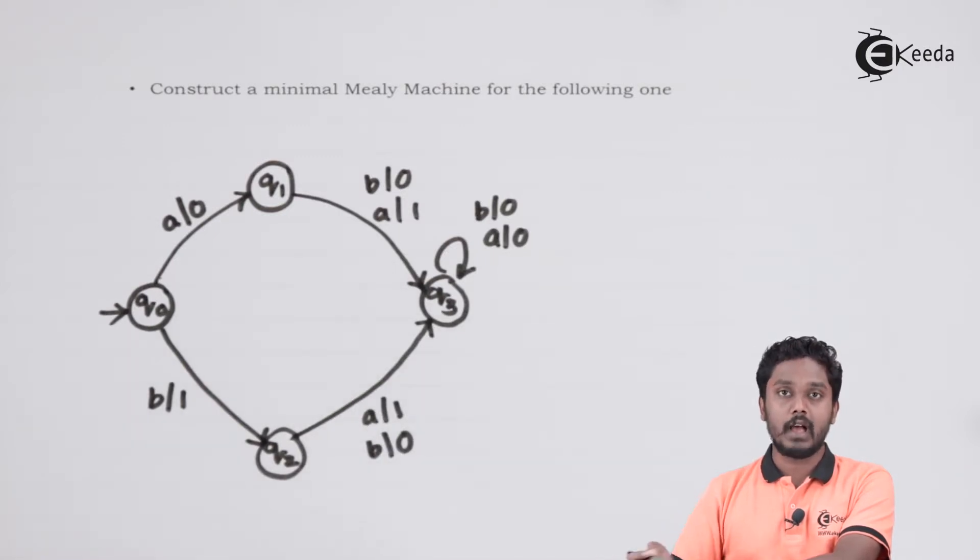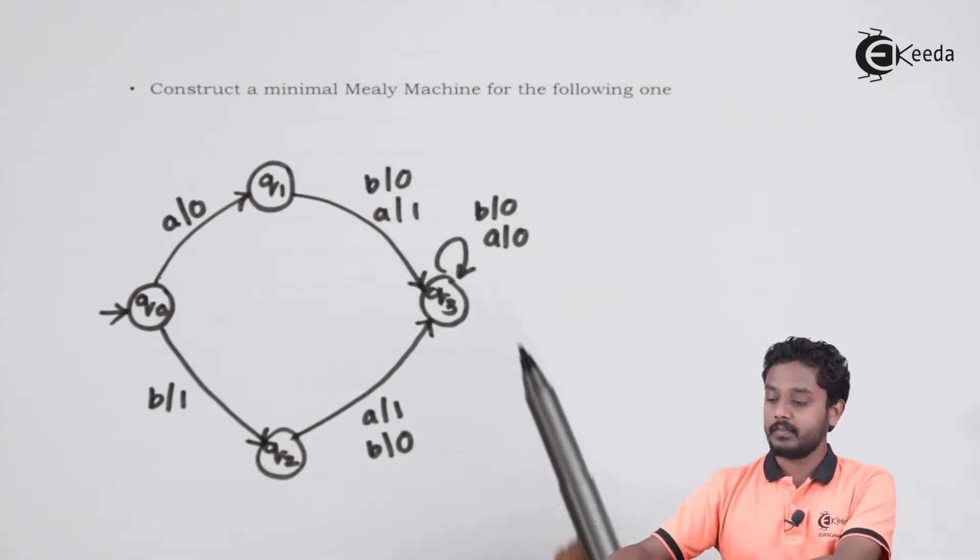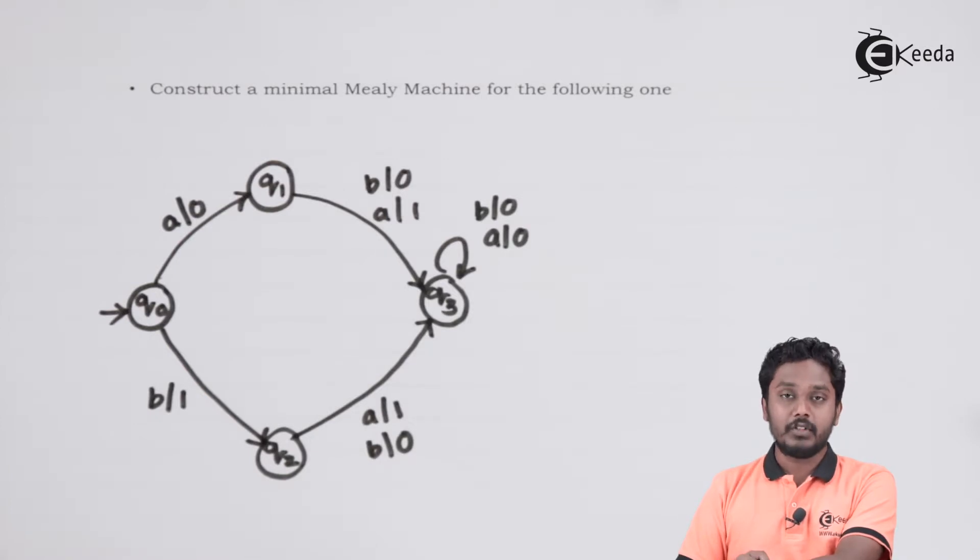From both Q1 and Q2, we have transition to state Q3 on same transition of A's and B's. From Q3, both A and B are going to produce an output 0.